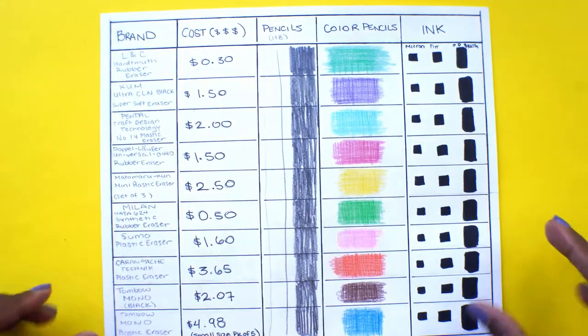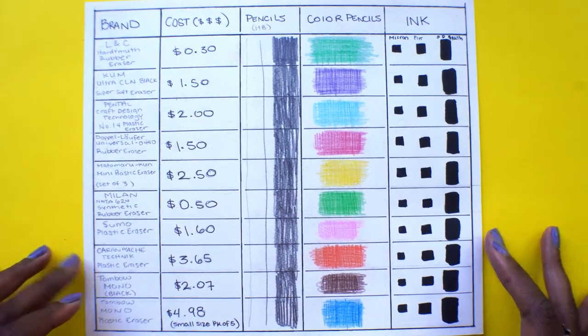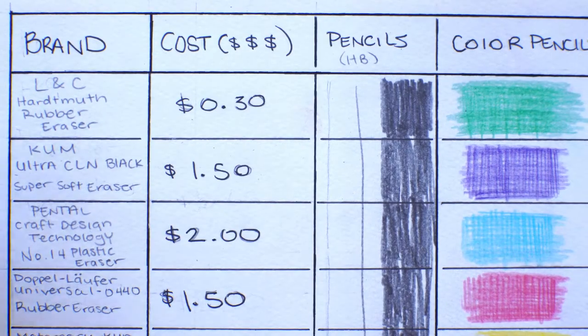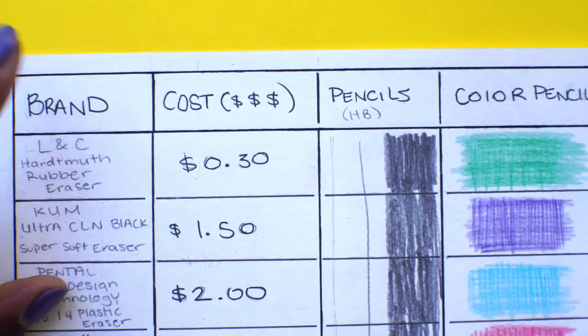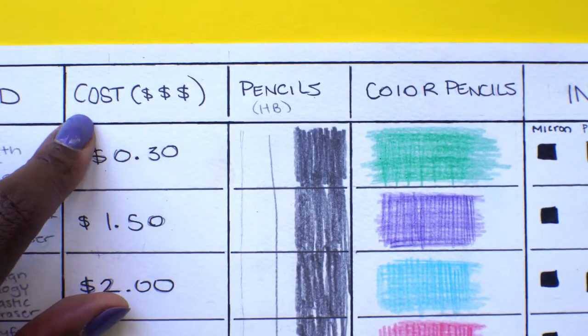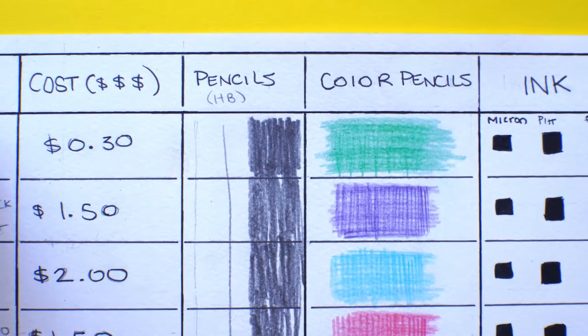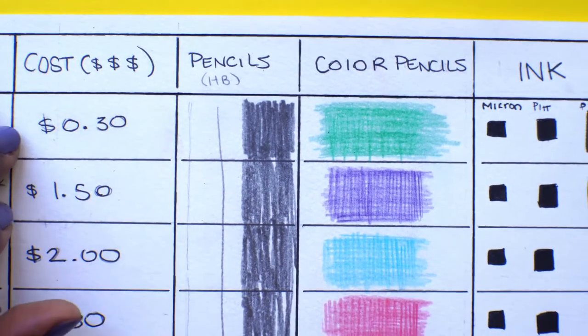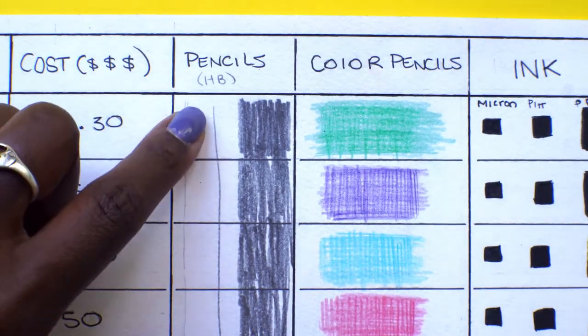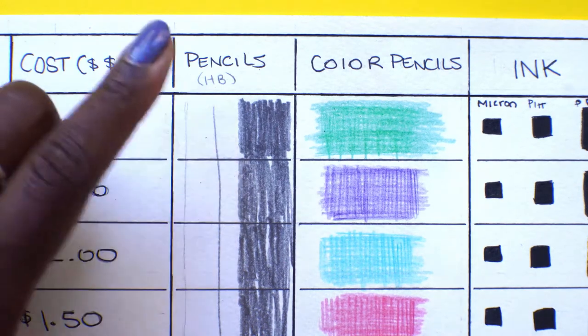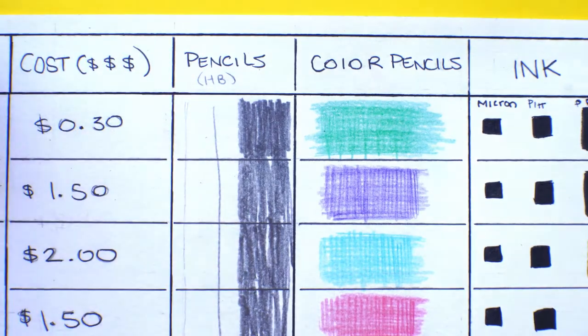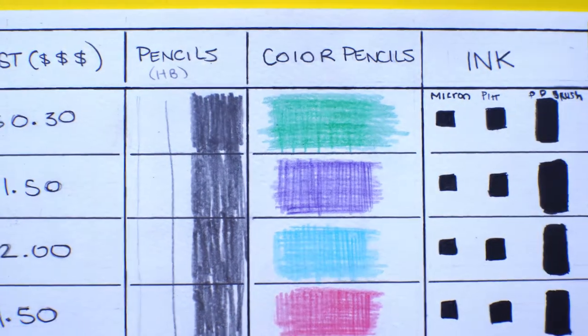So, I decided to make a chart to test all of the erasers. As you can see, I have about five different categories. First is the brand of the eraser. And then the cost of each one. I did the pencil test and ink test similar to what Casey Golden did. But with the inks it's a little different. I did the same light strokes, medium strokes, and heavy strokes for the pencil. Strokes or marks, I guess. And the pencil that I used was an HB. HB is pretty standard. I also did colored pencils.